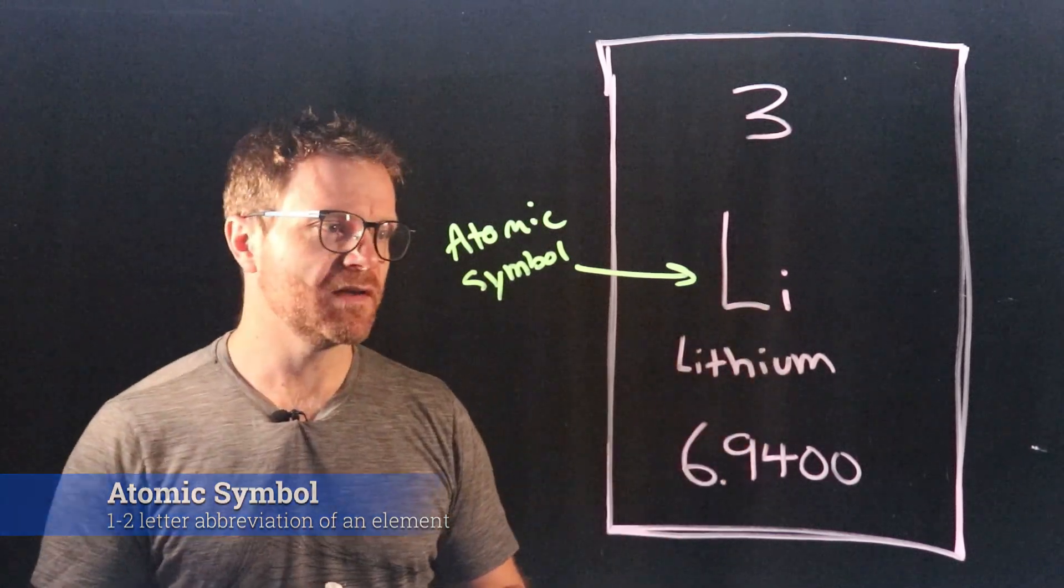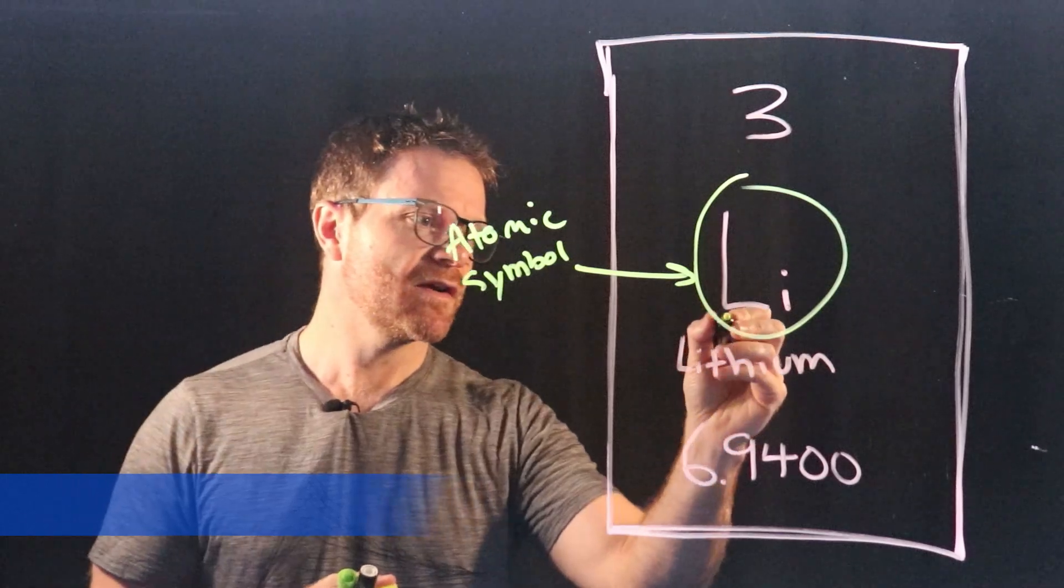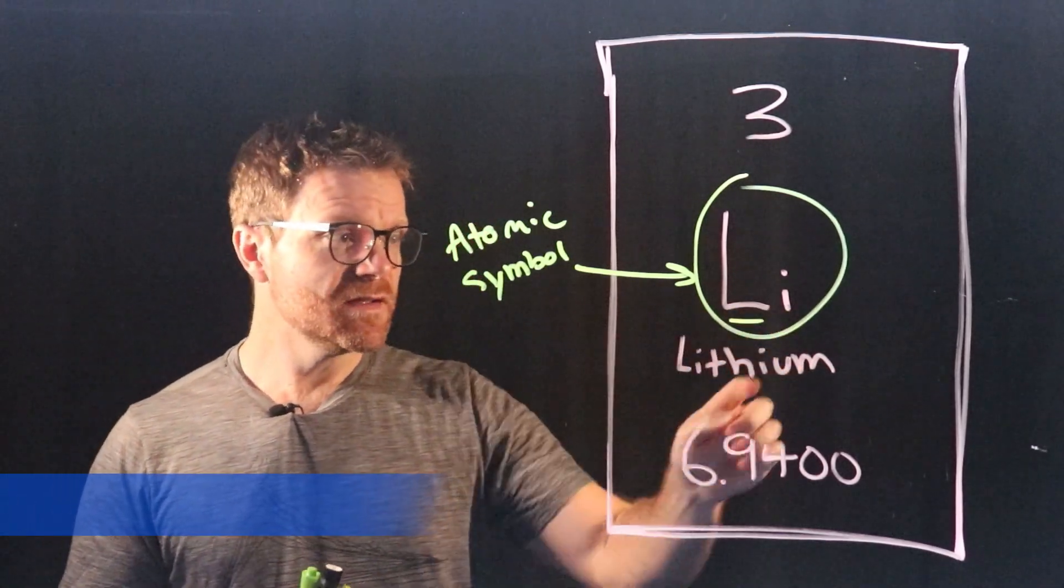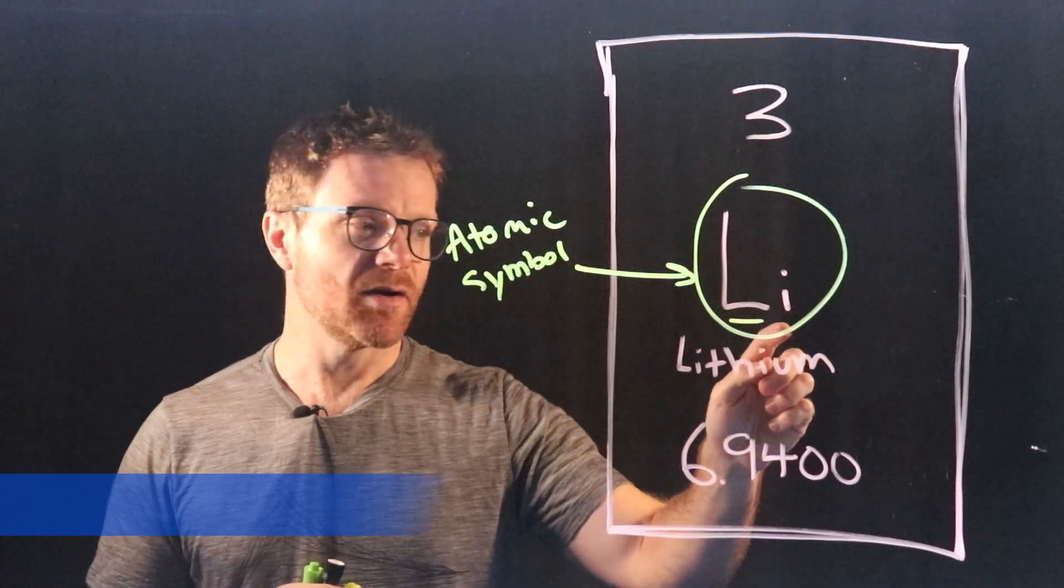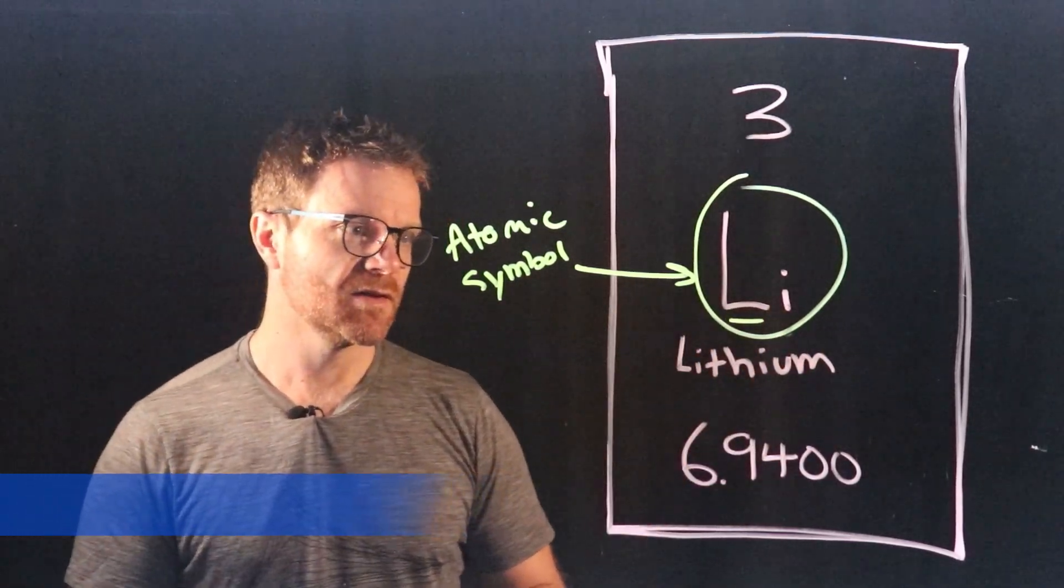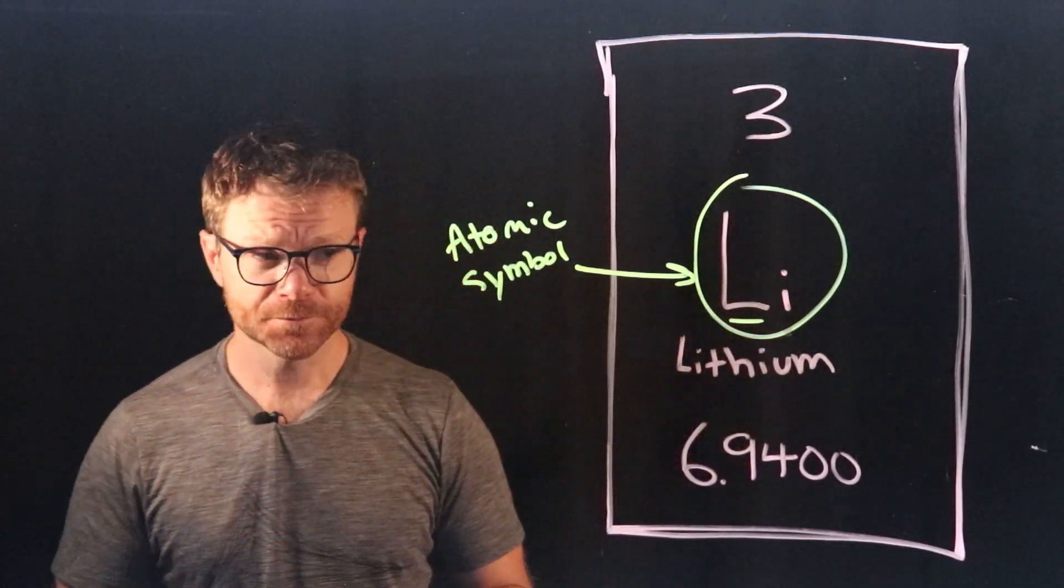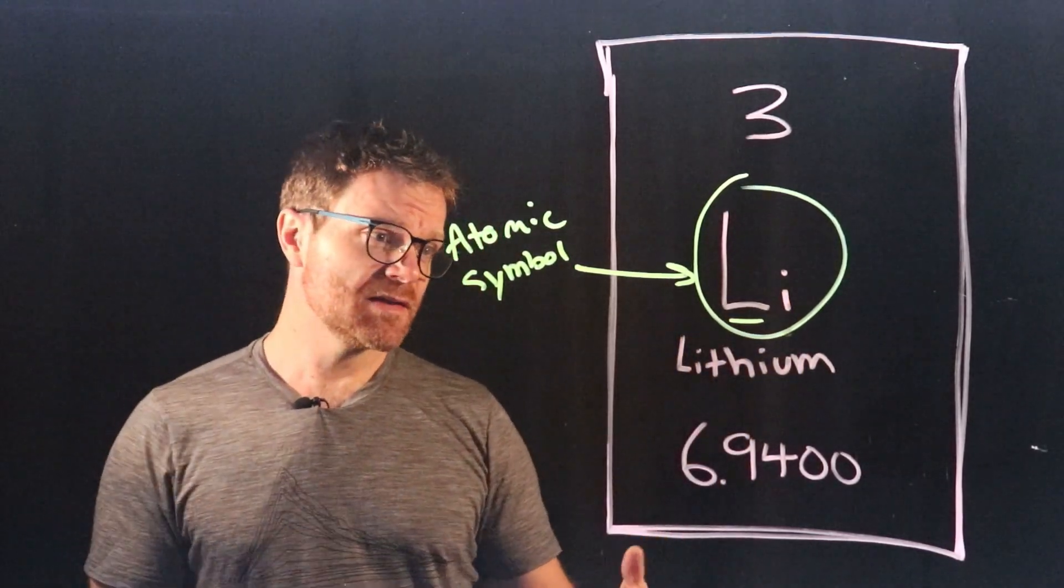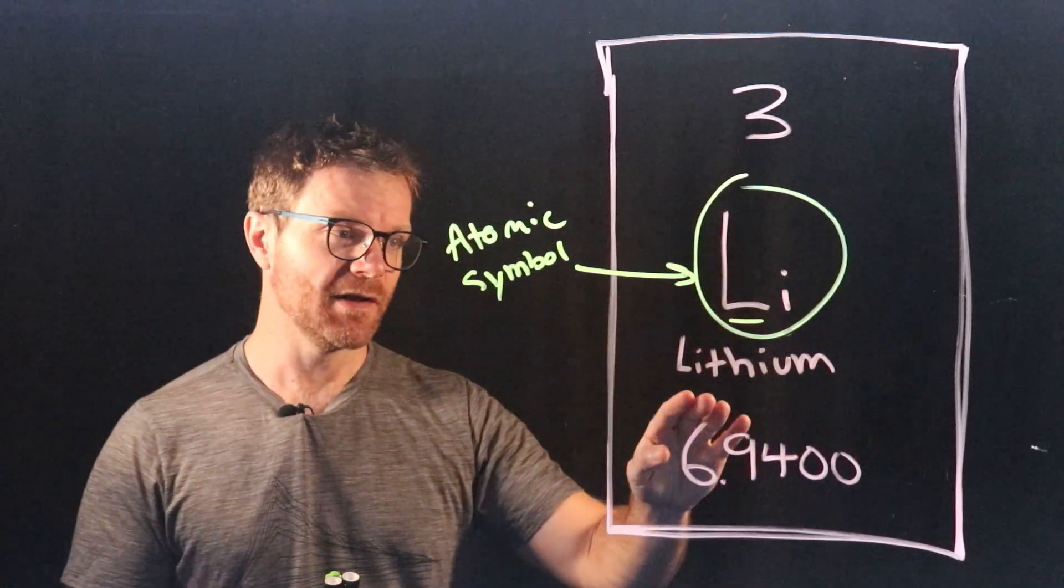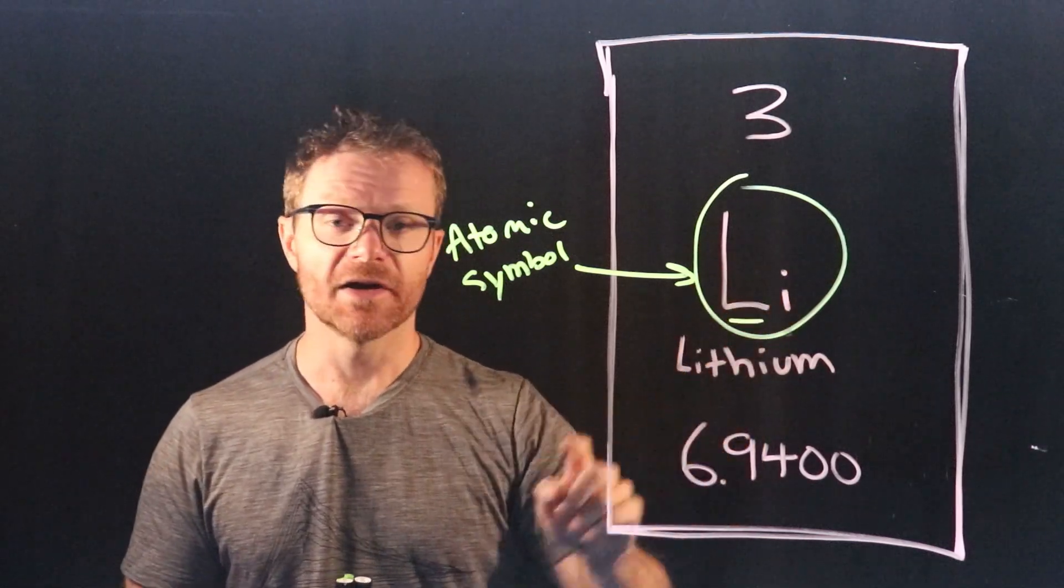There's some important conventions about the atomic symbol. The most important thing is that the first letter of the atomic symbol is always capitalized, and there isn't always a second letter. But if there is a second letter, it's always lowercase. So lithium is very specifically capital L and then lowercase i. In this case, there's a lot of parity between the atomic symbol and the word lithium. You can see the atomic symbol Li is just the first two letters of lithium.